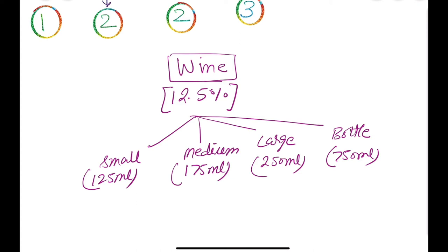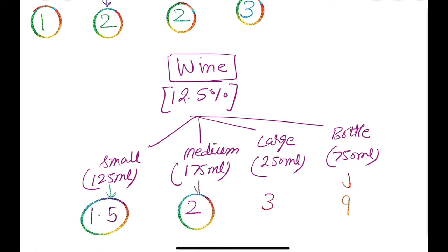How many units? Small glass is 1.5 units. Medium glass, which is 175 ml, is 2 units. Large glass, which is 250 ml, is 3 units. And a bottle of wine, which is 750 ml, is 9 units. This is about wine.